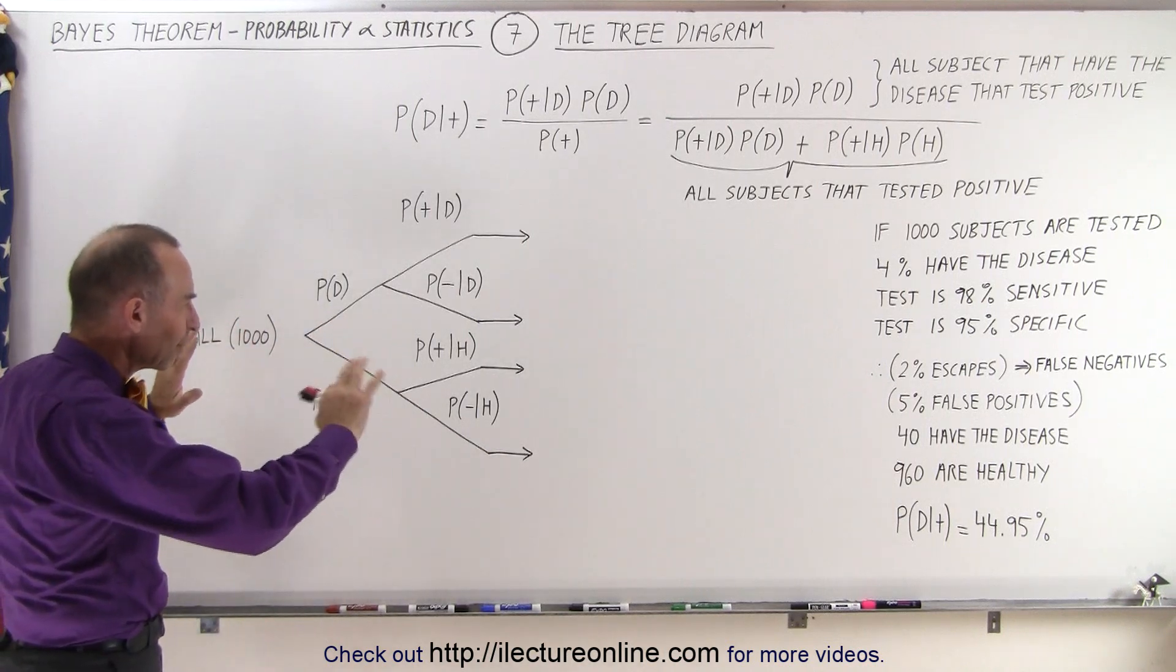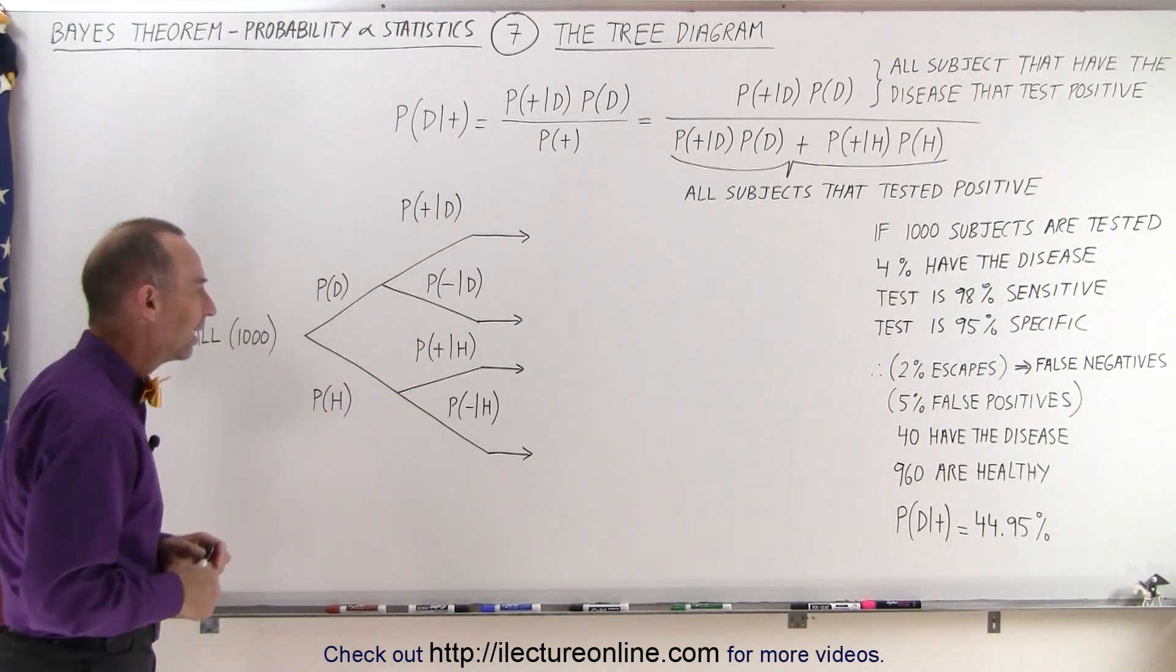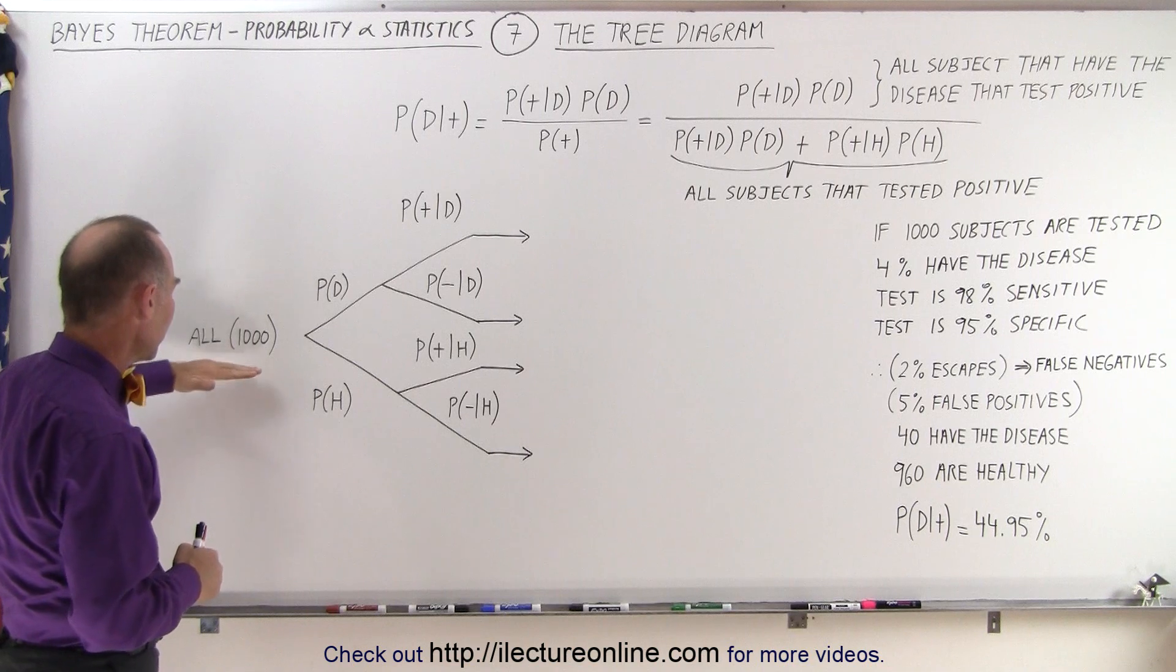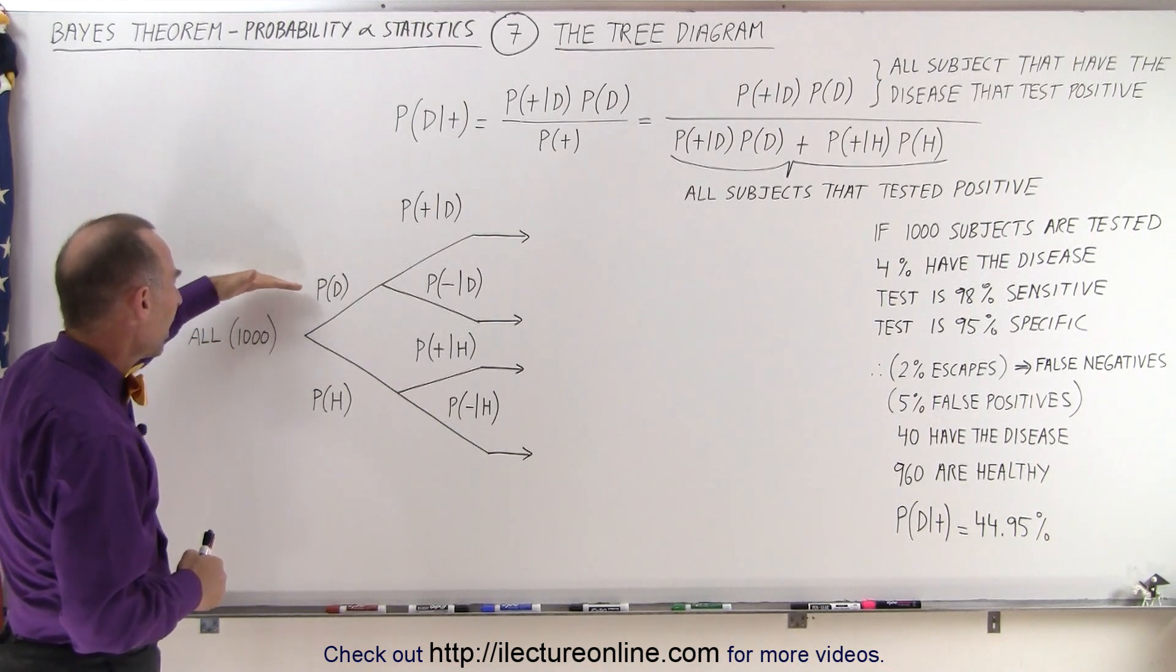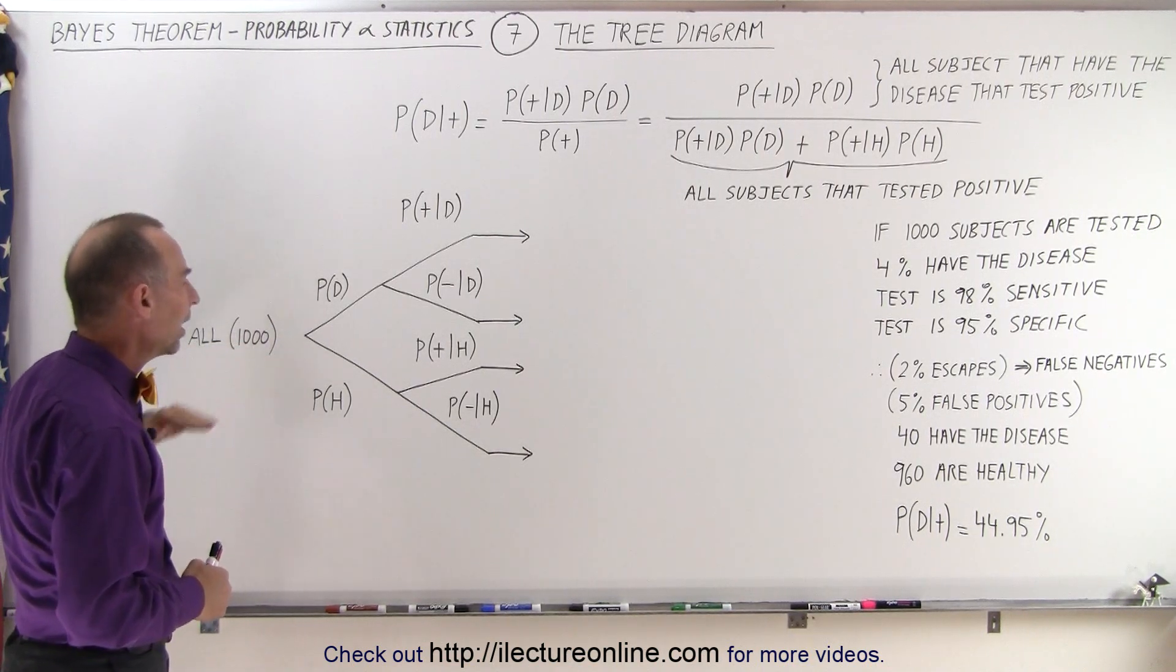So what does that tree diagram look like when we start putting numbers in there? Well, first of all, there are a thousand subjects. How many have the disease and how many were healthy?